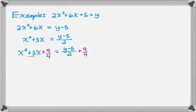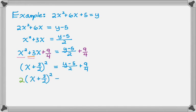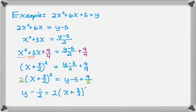The left-hand side is now a perfect square trinomial. The square root of x squared is x, and half of plus 3 is plus 3 halves, so we get the quantity x plus 3 halves squared, equaling the right-hand side. Solving for y: multiply both sides by 2, giving 2 times the quantity x plus 3 halves squared equals y minus 5 plus 9 over 2. Since negative 5 is negative 10 halves, and adding 9 halves gives negative 1 half, we solve for y and add 1 half to both sides.